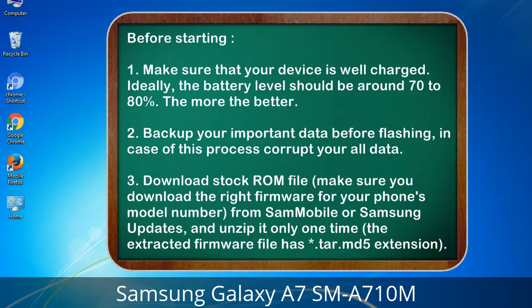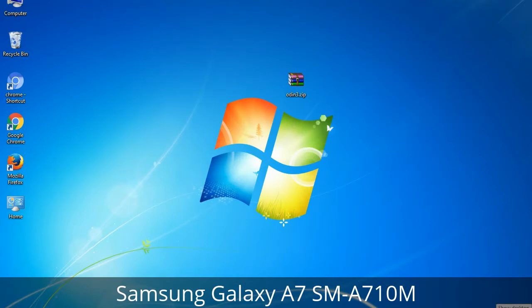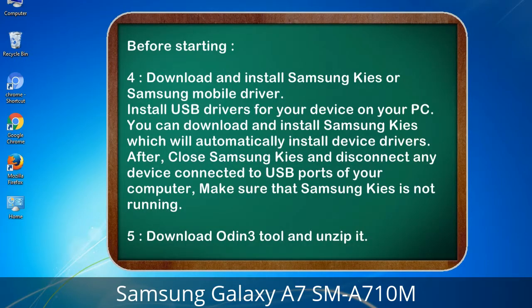3. Download the stock ROM file. Make sure you download the right firmware for your phone's model number from Sammobile or Samsung Updates, and unzip it only one time. The extracted firmware file has a *.tar.md5 extension. 4. Download and install Samsung KIS or Samsung mobile driver to install USB drivers for your device on your PC. Samsung KIS will automatically install device drivers. Afterwards, close Samsung KIS and disconnect any device connected to USB ports; make sure Samsung KIS is not running. 5. Download the Odin 3 tool and unzip it.